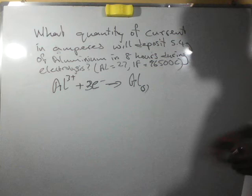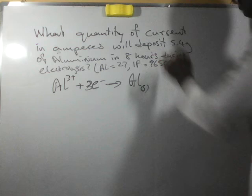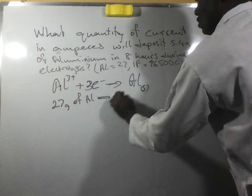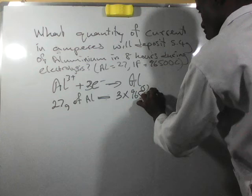So, 27 grams of aluminum will require three times 96,500 coulombs, which is 289,500 coulombs.